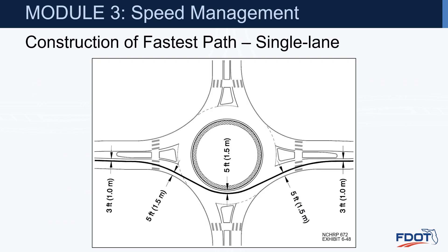This exhibit from NCHRP 672 shows the construction of a fastest path for a single lane roundabout. We have three feet from a painted edge line on approach, five feet from face of curb at the entry, five feet face of curb circulating, five feet as you exit, and three feet from a painted edge line as you're exiting. If you had a raised median for the entire stretch, then you would use five feet from the face of curb on both the entry and the exit.